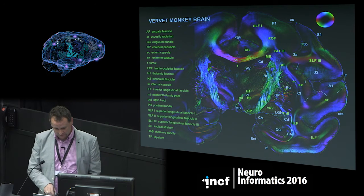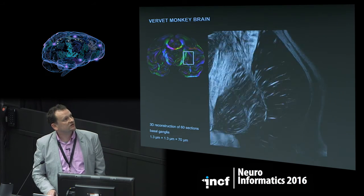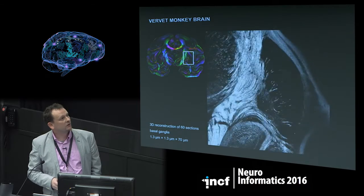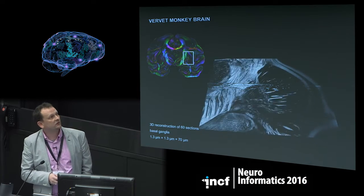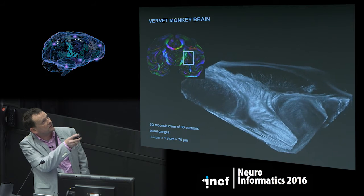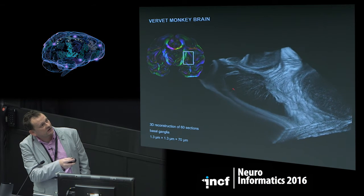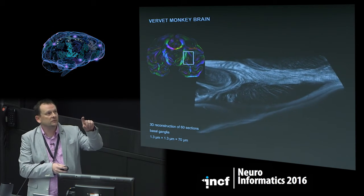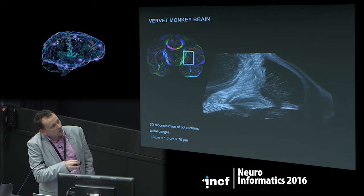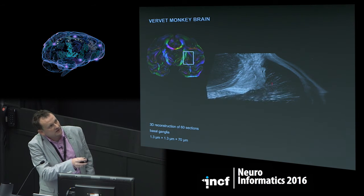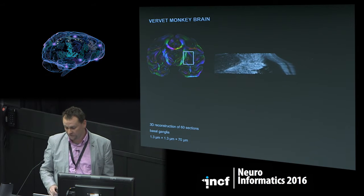Next size: the vervet monkey brain. You can identify many anatomical structures. A couple of weeks ago we reconstructed for the first time 60 sections at 1.3 micron resolution. The image shows a cut-out in the basal ganglia region — this is the reconstruction of just the amplitude of the birefringent signal, with no orientation or tractography applied. You can already identify in some regions where fibers are not too dense single fibers or small fiber tracts.